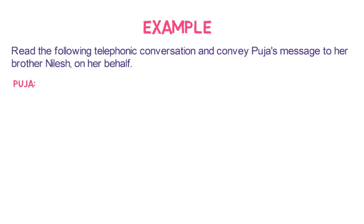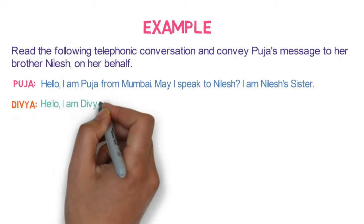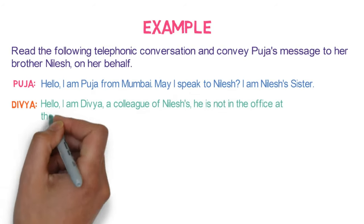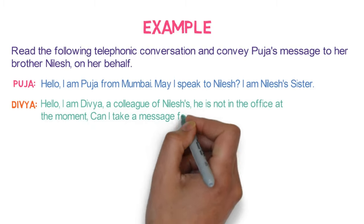Puja: Hello, I am Puja from Mumbai. May I speak to Nilesh? I am Nilesh's sister. Divya: Hello, I am Divya, a colleague of Nilesh. He is not in the office at the moment. Can I take a message for him?